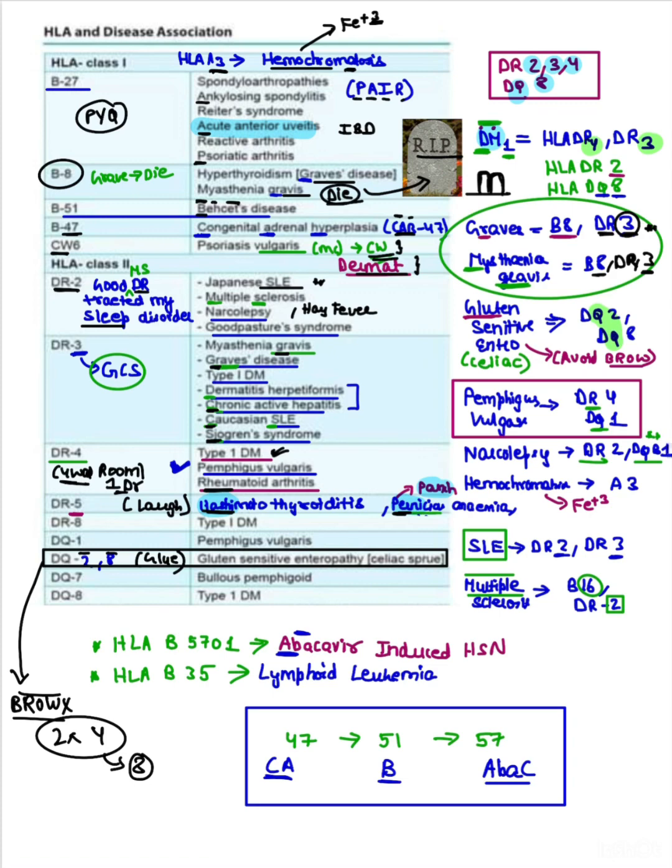Pemphigus vulgaris: the room has four walls, that is DR4. This is also associated with DQ1, not so important. Narcolepsy: good doctor treated my sleep, that was DR2. Also now it says it's associated with DQB1, not so important. Hemochromatosis: that is due to iron, that is A3 association.